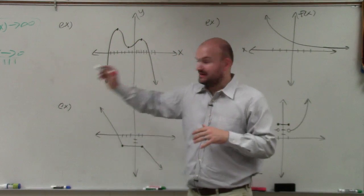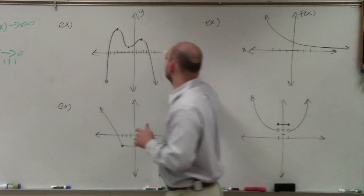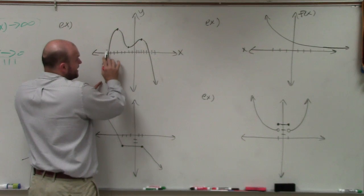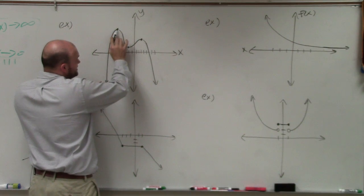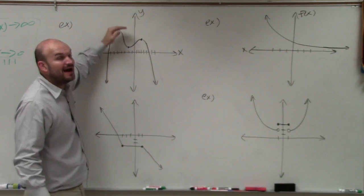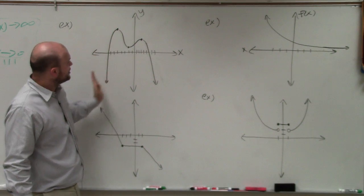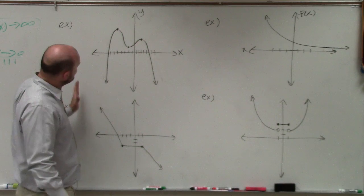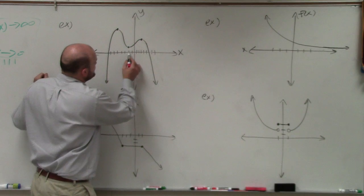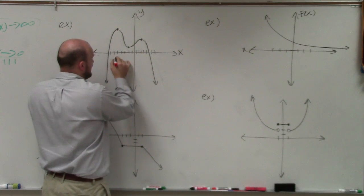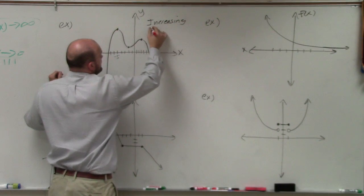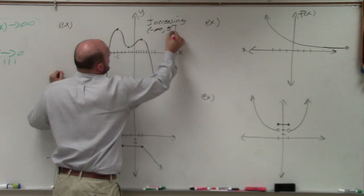We start from the farthest left. How far left does this graph go? It goes to negative infinity. From negative infinity, my graph keeps on increasing — it gets higher and higher — and then it kind of plateaus at a certain value. I'm not concerned about how high it's increasing; I just know that it plateaus. So where did it stop increasing? It was increasing all the way to the x-value of negative 5. So I can say the graph is increasing from negative infinity to negative 5.